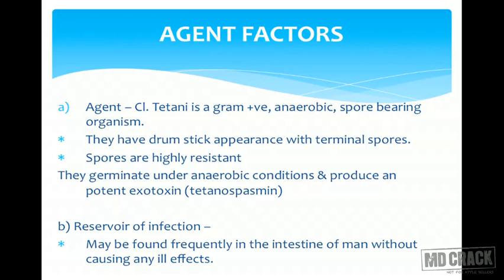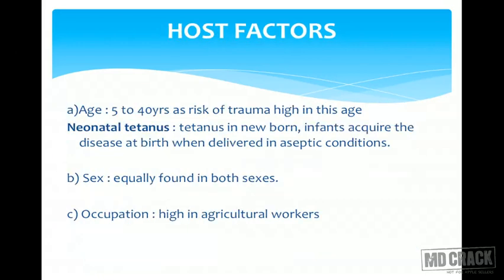The problem with tetanus is that it is a spore-bearing organism. Spores are resistant forms of life and can cause disease later on. The reservoir of infection is found in the intestine of man as well as other animals, and sometimes it won't cause any infection even while residing in the gut. The high-risk group is 5 to 40 years of age, as these people are mostly outside, playing and working, and therefore prone to trauma.